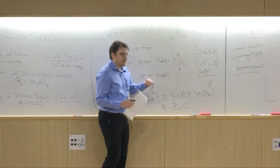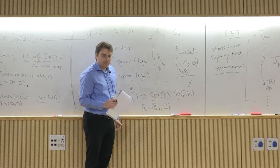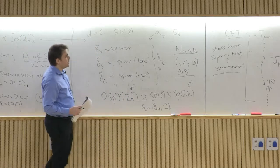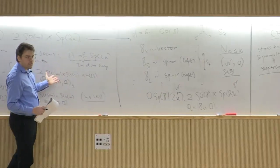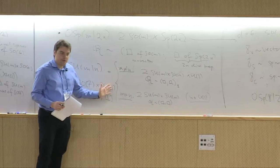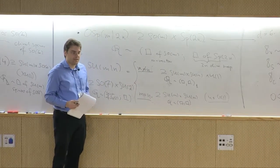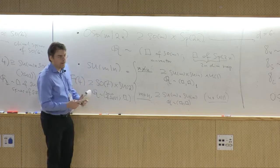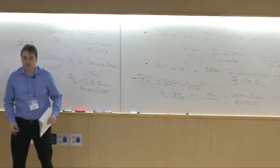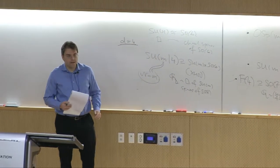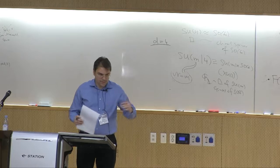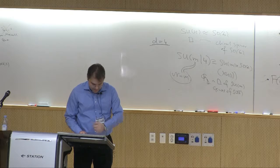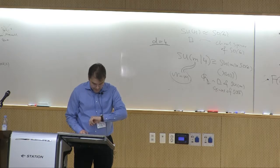There are (3,0) superconformal algebras, but no local sensible quantum field theories with that supersymmetry because they wouldn't have a sensible stress tensor. This is roughly speaking the analog of the Weinberg-Witten constraint in the context of superconformal field theories. A similar argument in four dimensions shows superconformal theories only exist with 16 or fewer supercharges: N equals 1, 2, 3, and 4.